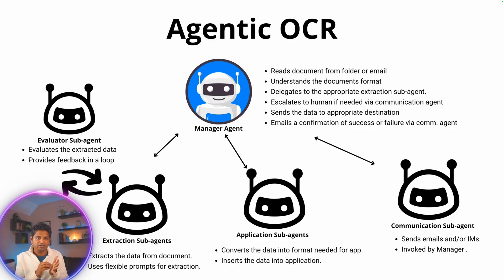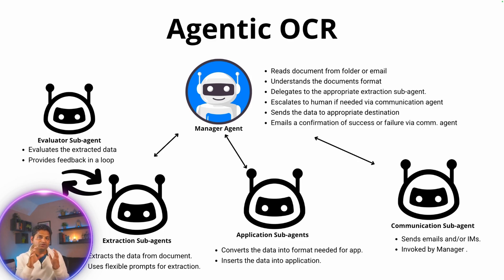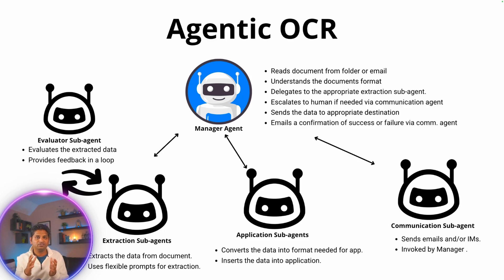These extraction sub-agents use the latest LLM models like Gemini Flash 1.5 or 2, which are some of the best models for extraction. Once it extracts the data, it outputs it in JSON format along with confidence scores. If the confidence scores are low, it's escalated to an evaluator agent which uses another AI model to check the data. Only when both models agree is it passed back to the manager agent. If they cannot agree, it's escalated to a human.